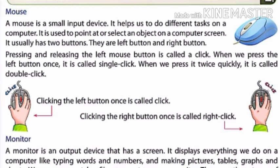When we press the left button once, it is called a single click. When we press the left mouse button twice, it is called a double click.